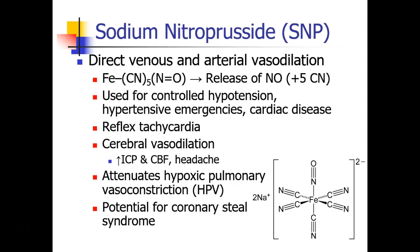The other IV drug that's a nitrate is sodium nitroprusside, which is a direct venous and arterial vasodilator. You can see its structure here — it does have one nitric oxide group that can be released, along with a whole bunch of cyanide groups, which we'll speak about in just a moment. This nitrate can be used for controlled hypotension, for treatment of hypertensive emergencies, and in cardiac disease.